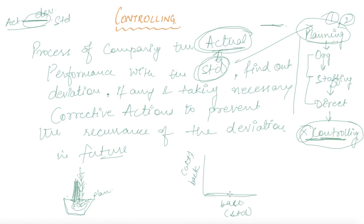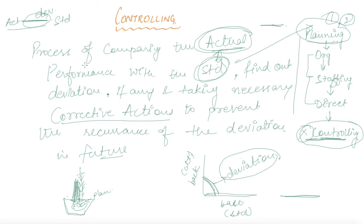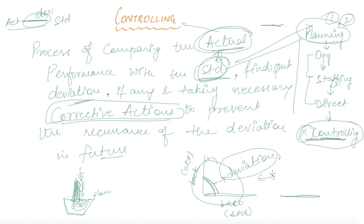In between, whatever gap is found will be named as deviation. After finding a deviation, you will select a new plan, taking care of these deviations so they will not occur in future — this is what is named as corrective action. So to restate the definition: controlling is the process of comparing actual performance with the standard which you had planned, finding out the deviation if any, and taking necessary corrective action to prevent the reoccurrence of deviation in future.